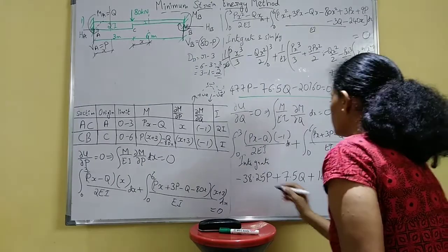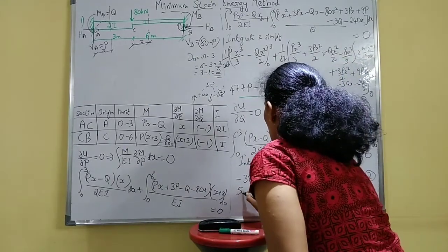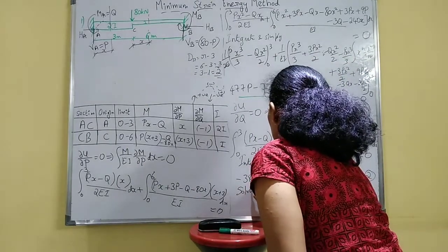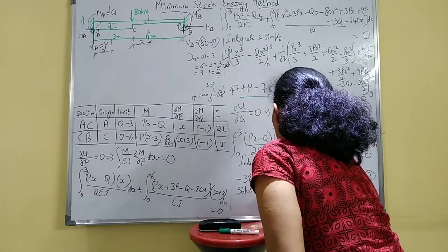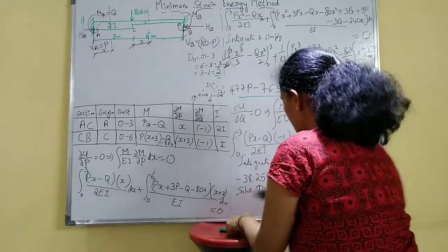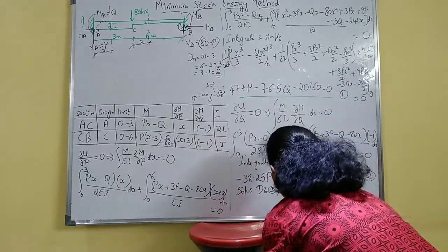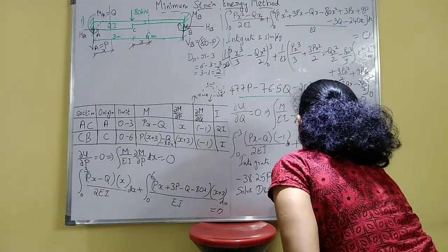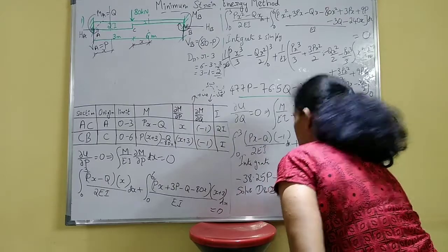After integrating and simplifying, the second equation is: −38.25P + 7.5Q + 1440 = 0. Mark it as equation 2. Now solve equations 1 and 2 to get the values of P and Q.